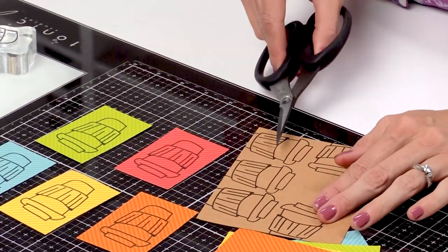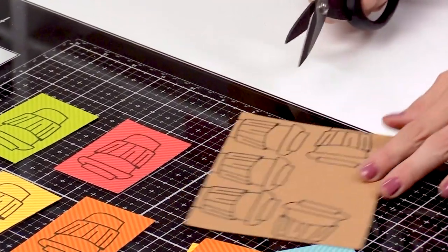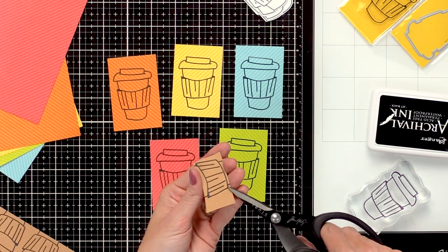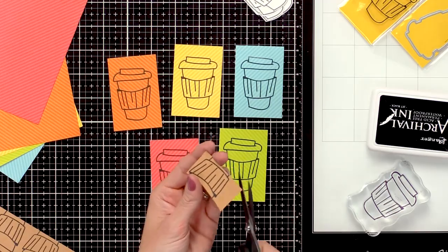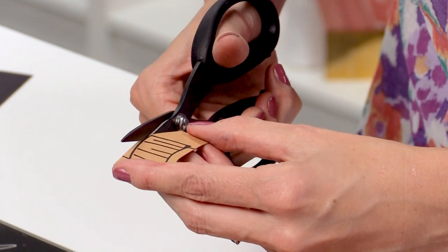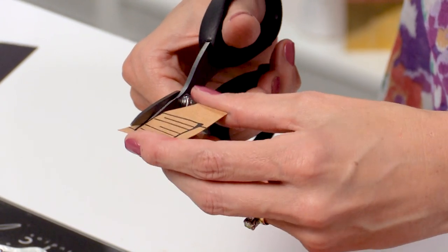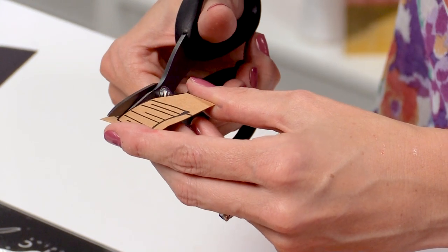With my coffee cups all stamped I'm now going to fussy cut them out. On this craft paper I'm just going to fussy cut out the wrapper part. The trick here is to cut right along the edge of the wrapper, even cut into the black just a little bit. This will make your paper piecing be more seamless.